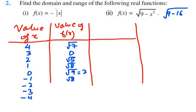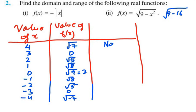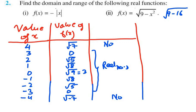For x = minus 2: minus 2 squared is 4, so √(9 - 4) = √5. For x = minus 3: minus 3 squared is 9, so √(9 - 9) = 0. For x = minus 4: √(9 - 16) = √(−7). Now we check which values are real numbers. √(−7) is not a real number, but 0, √5, √8, 3, √8, √5, and 0 are all real numbers. The last value √(−7) is also not a real number.